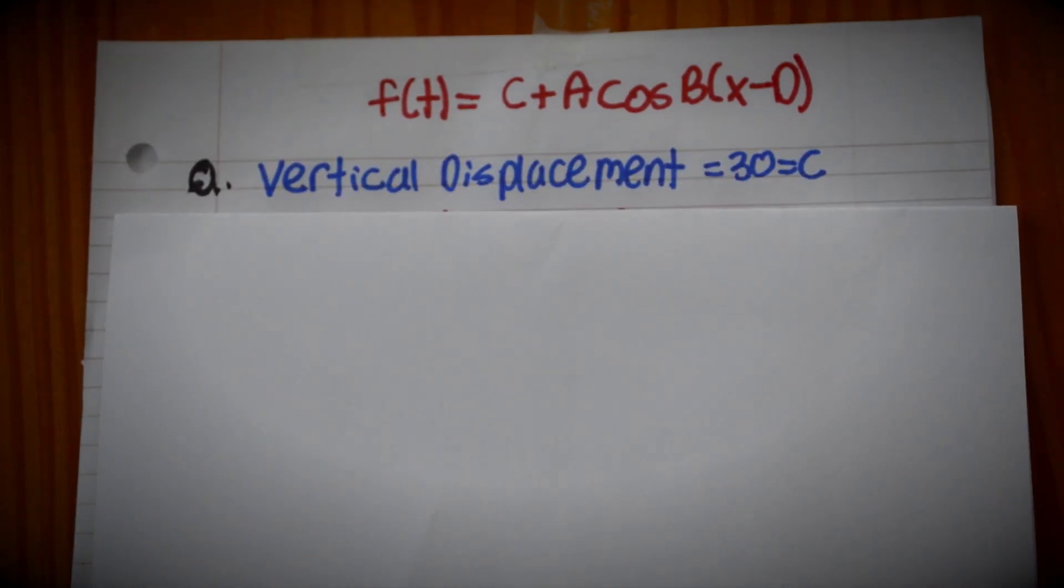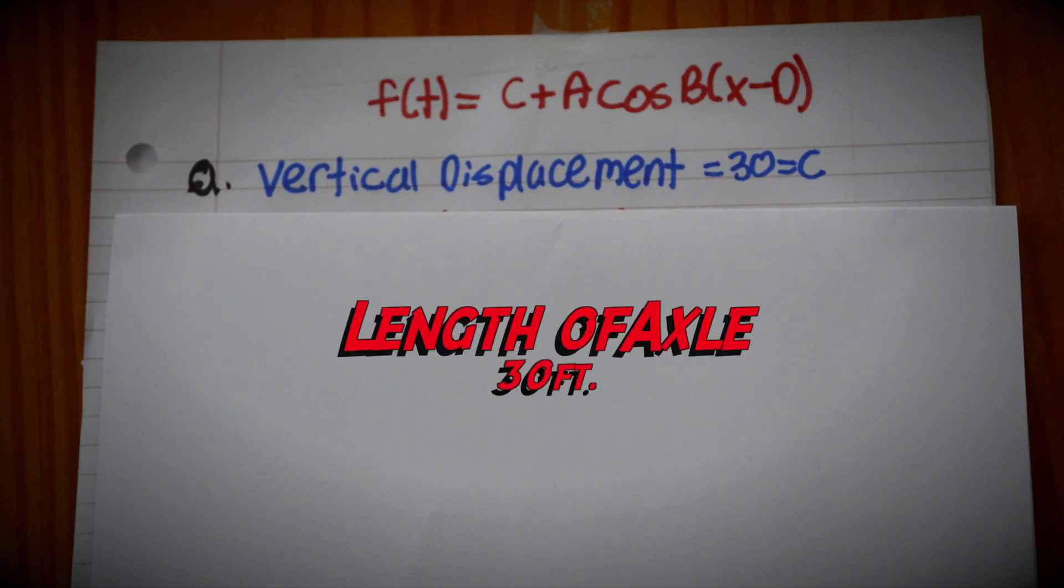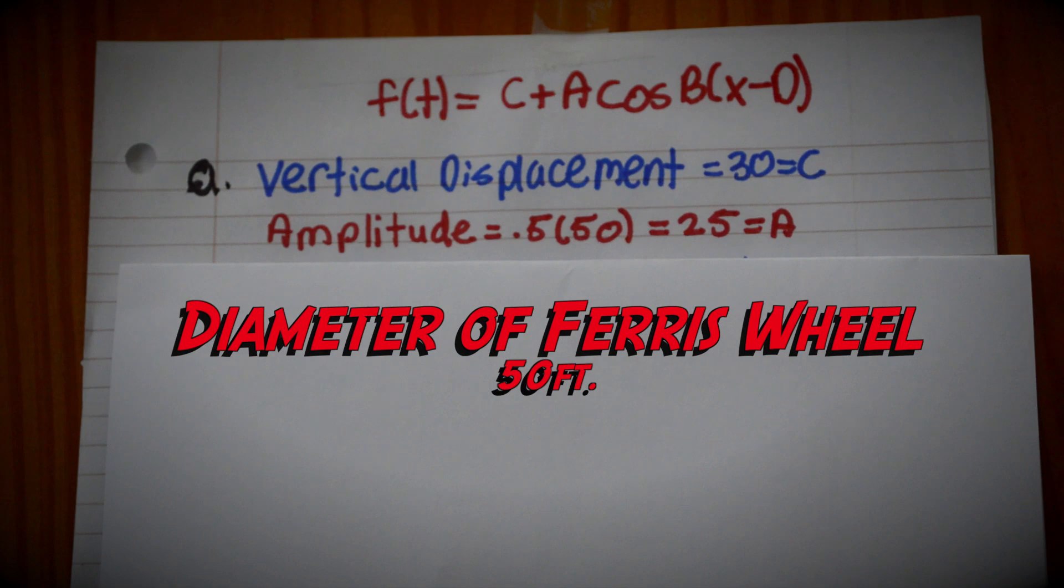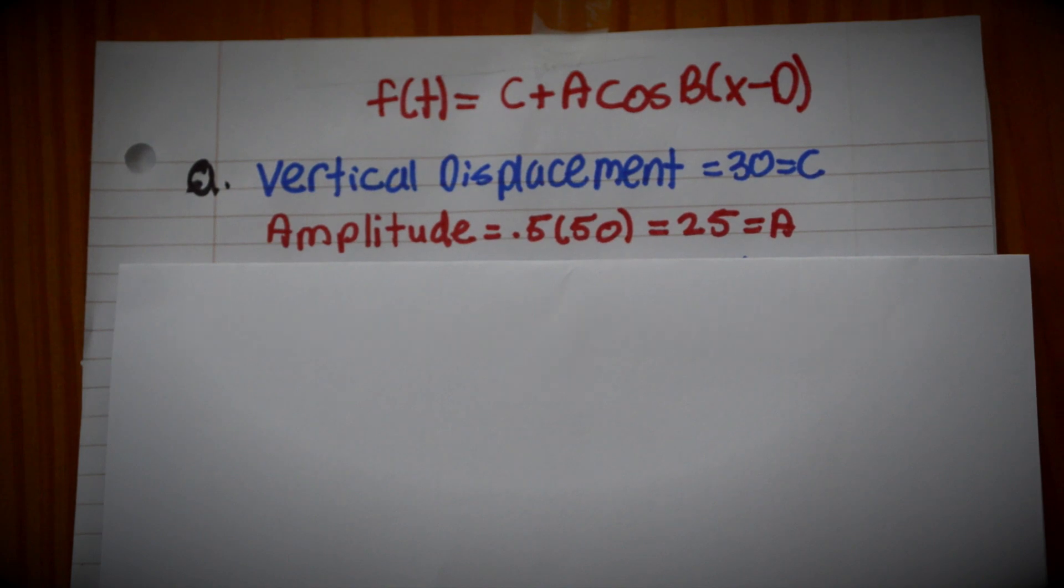The vertical displacement for this problem is 30, which is c, which is the length of our axle. The amplitude is 0.5 times 50, and 50 is our diameter, which gives us 25, which is a.